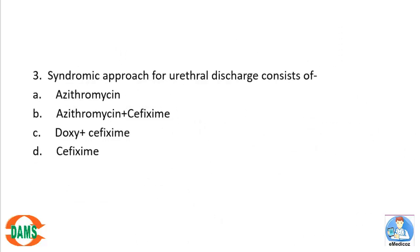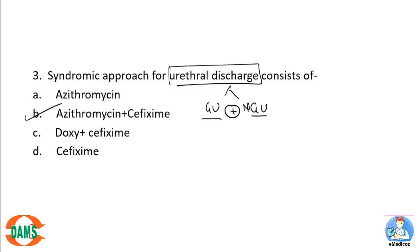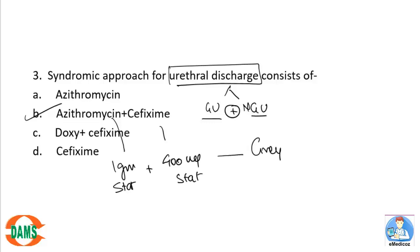Regarding the syndromic approach: this approach treats two etiologies together. For urethral discharge, both gonococcal and non-gonococcal urethritis are treated simultaneously. The classical regimen is azithromycin 1 gram stat and cefixime 400 mg stat — two stat doses taken together. This is the urethral discharge syndromic packet.